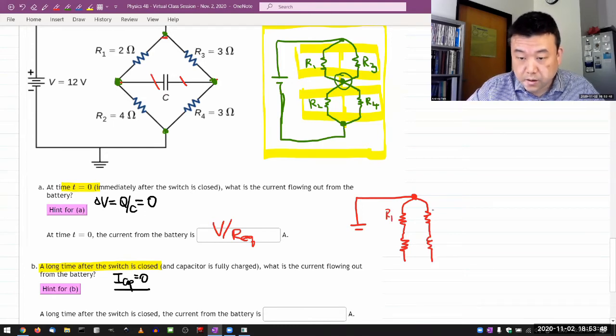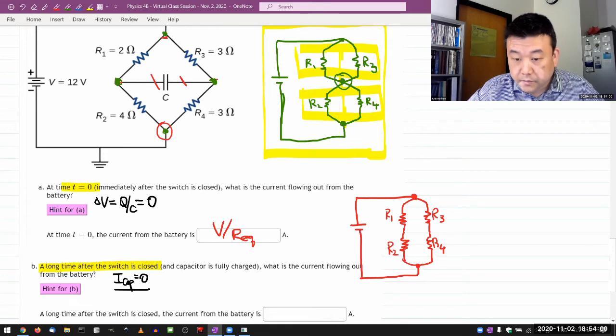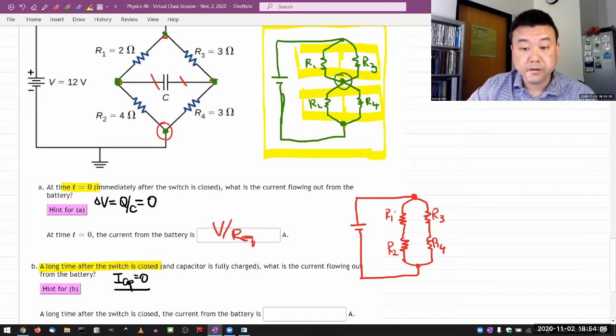So these are resistors R1, R3, R2, R4. And now they are connected to this junction here, which is now connected to the other end of the battery. So this is another circuit that can be simplified as being series and parallel.